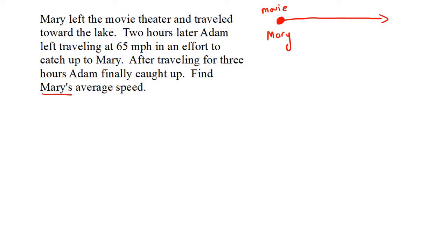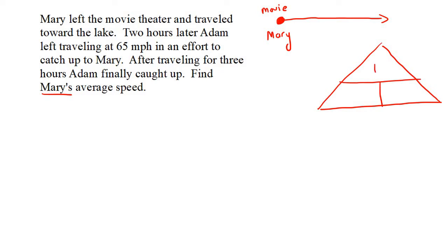The first thing we need to know is the relationship between distance, speed, and time. What I often like to show students is this little triangle. What goes at the top of the triangle is D for distance, then S for speed, and T for time. Let me just write that down for you — D is for distance.